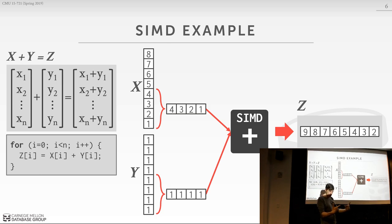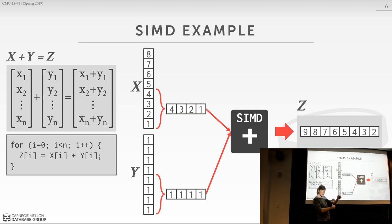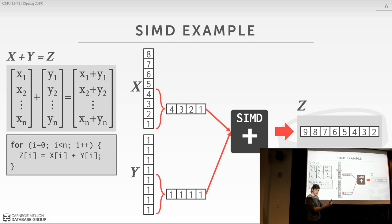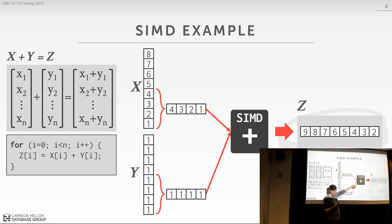To get the data out of the SIMD registers, you have to store it back in your CPU caches or memory, and then you can do whatever else you want with it. Not all instructions can be SIMDized or vectorized — it's really for basic primitive operations, which is the kind of thing we care about in a database system.